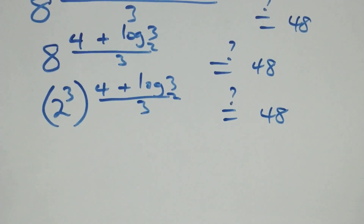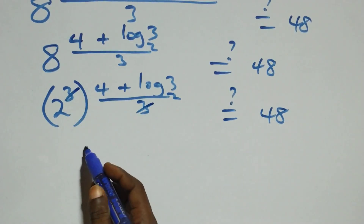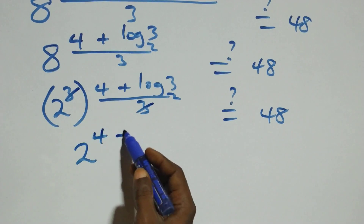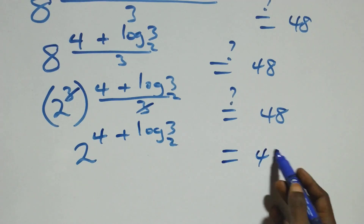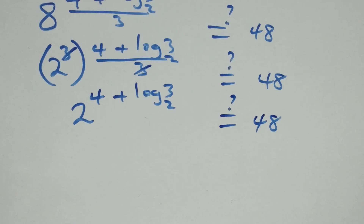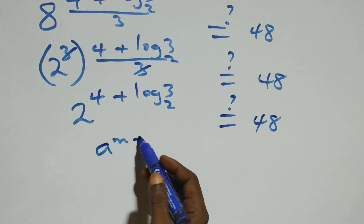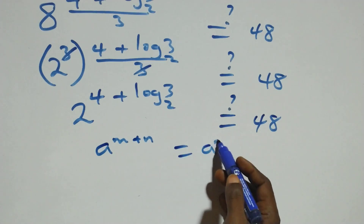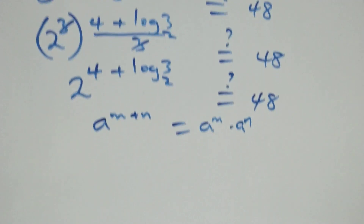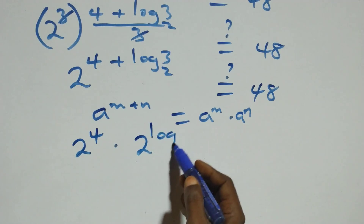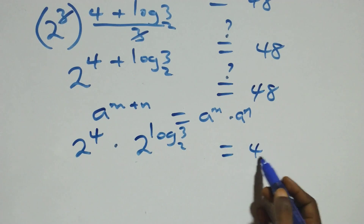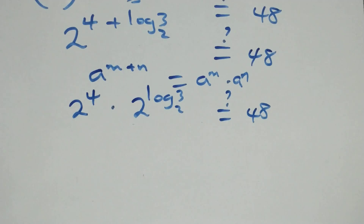This power multiplies and 3 cancels each other. We have 2 raised to power 4 plus log 3 base 2. Is it equals to 48 on this side? We apply the law of indices: a raised to power m plus n is the same thing as a raised to power m times a raised to power n. That is, we have 2 raised to power 4 times 2 raised to power log 3 base 2, equals 48.